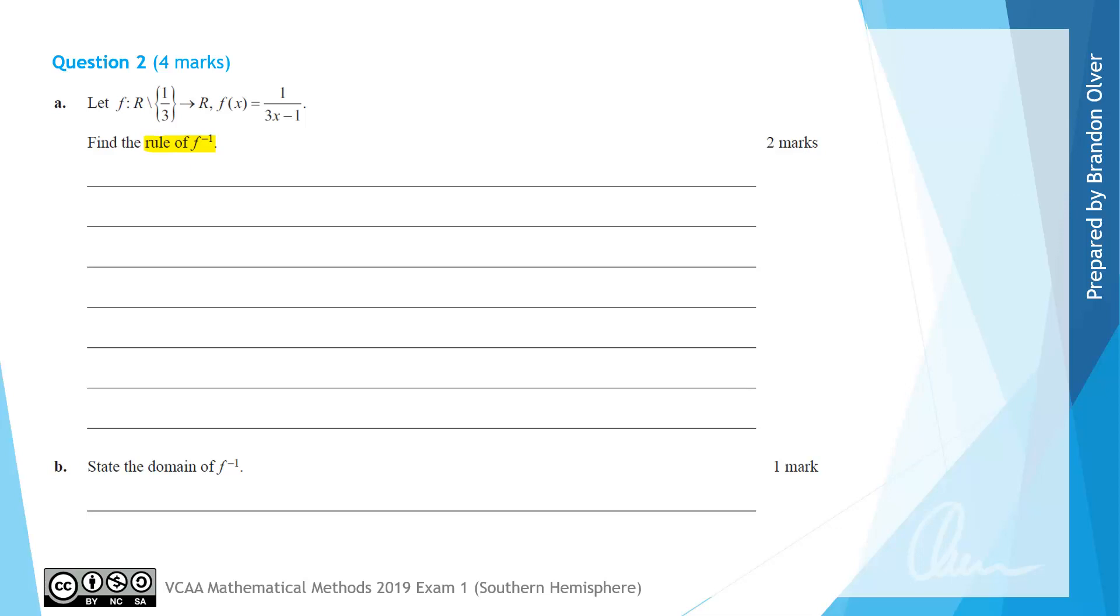When finding the rule of the inverse there's a few steps that I like to follow. The first step is to let y equal f(x) so that we just have x and y in our rule. Therefore for this question we have y equals 1 divided by 3x subtract 1.